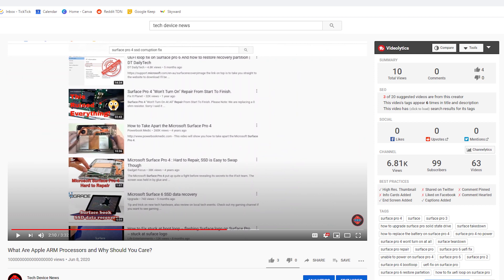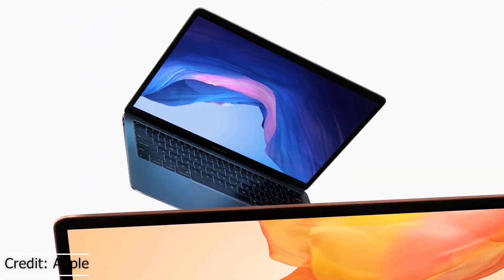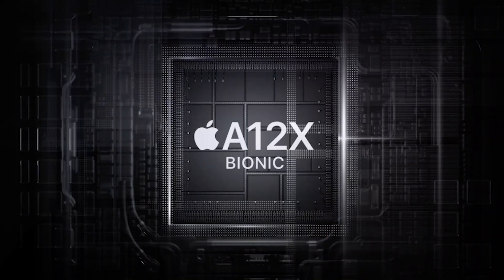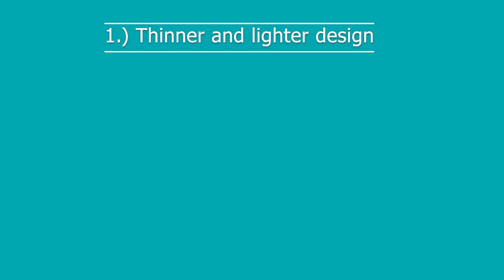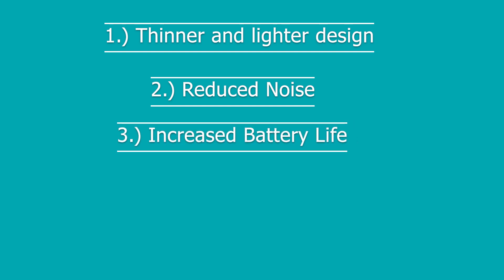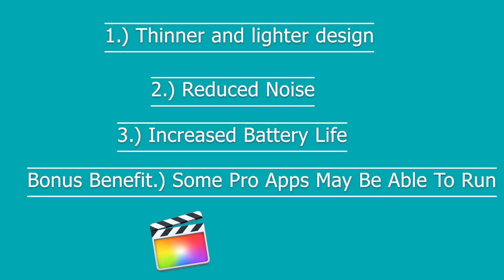But before you click off this video, let me explain what Apple is doing differently with ARM. Apple is all about thin, light, and powerful systems, and they also make their own SoCs. That's why they're now designing a custom Apple chip designed for their own ARM hardware and software, and this creates many benefits for people. These benefits would include a thinner and lighter laptop, no noise since there wouldn't be a fan spinning inside, and greatly increased battery life. One other benefit is that you may also be able to run some pro-level apps, such as Final Cut Pro X and Logic Pro X, when Apple debuts that.